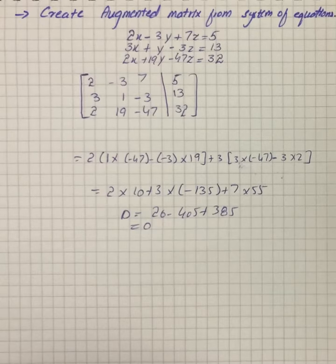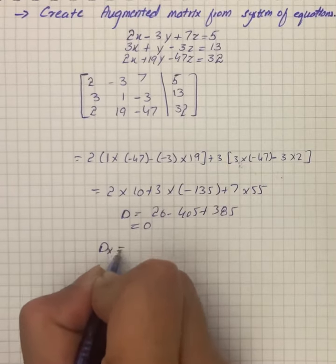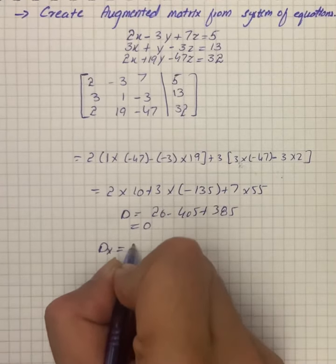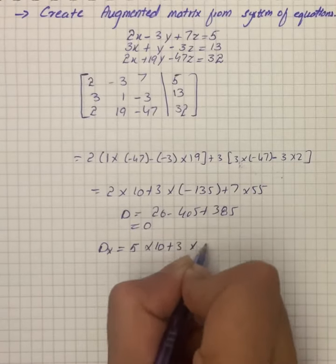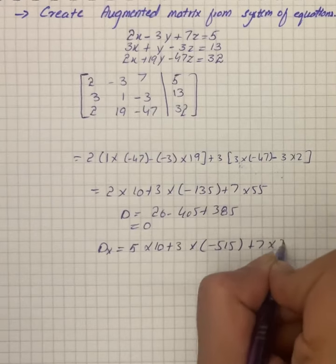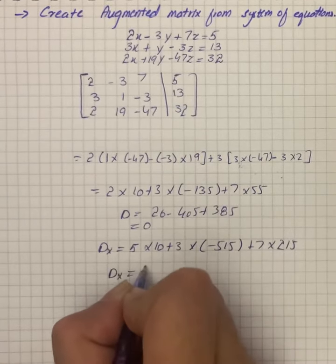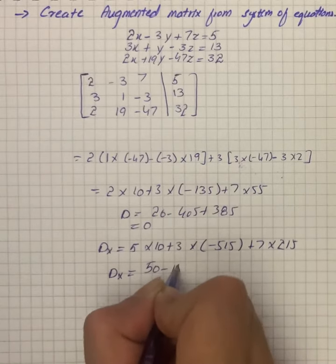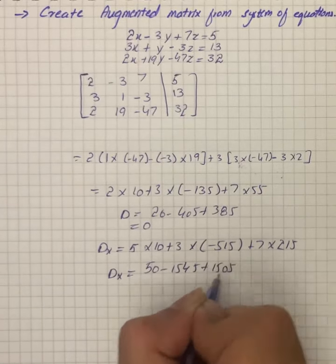So the condition is satisfied. We can write that Dx is equal to 5 multiply by 10 plus 3 into -515 plus 7 multiply by 215. So Dx is equal to 50 minus 1545 plus 1505, that is equal to 10.